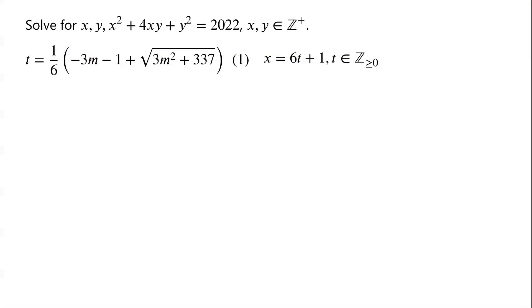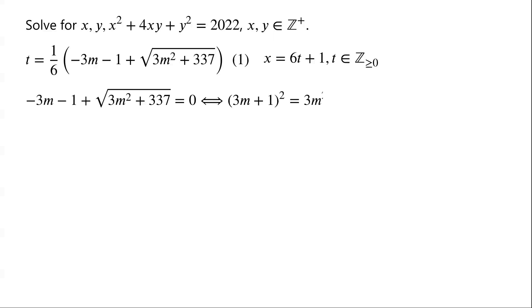Clearly, for sufficiently large m, root of (3m squared plus 337) is approximately equal to root(3) times m. So negative 3m minus 1 plus root of (3m squared plus 337) is less than 0 for sufficiently large m. We want to find m such that negative 3m plus root of (3m squared plus 337) equals 0, i.e., negative 3m minus 1 plus root of (3m squared plus 337) equals 0.